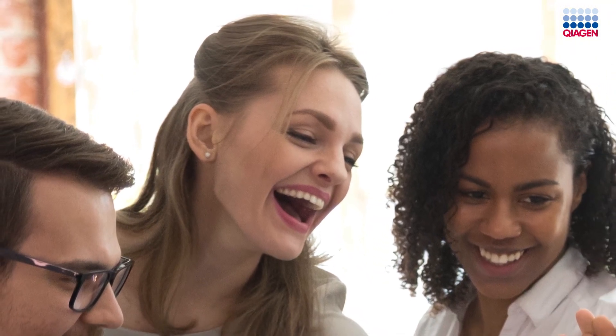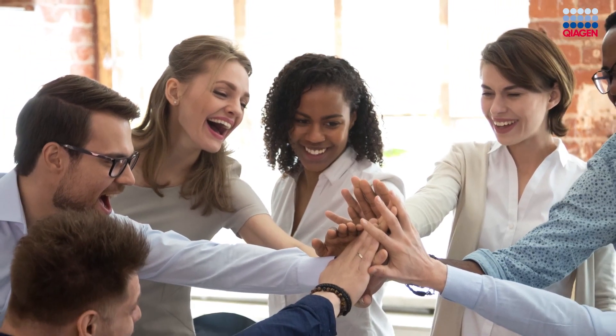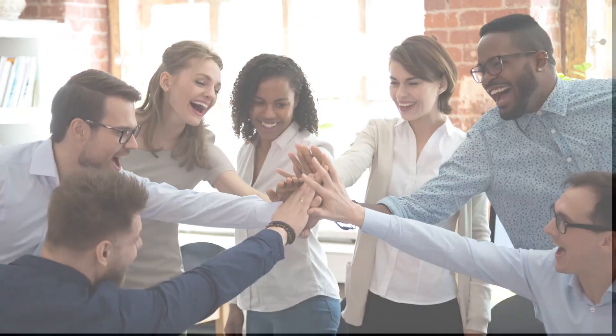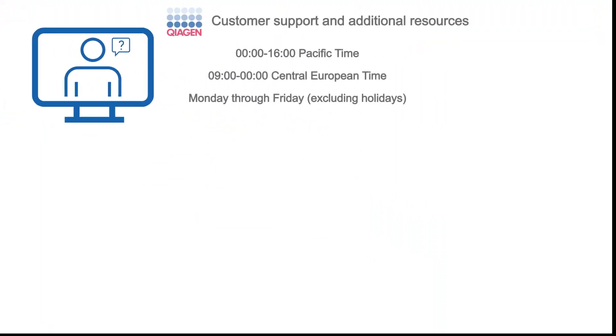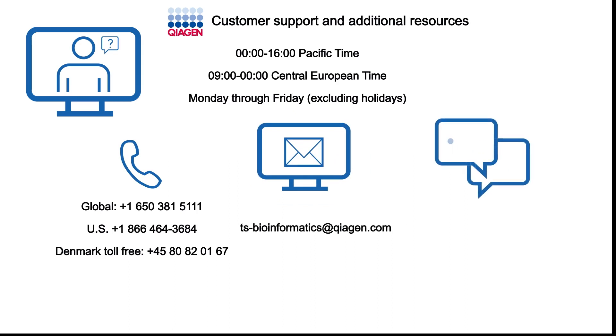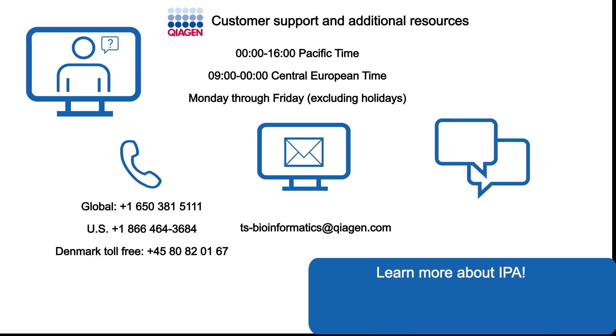Thanks for watching this video! We hope that you have a better understanding of the false discovery rate and how you can control it by adjusting your p-values in IPA. These tools can allow you to feel more confident in your discoveries and insights. If you have any questions, please contact us via phone, email, or chat. You can learn more about IPA at digitalinsights.qiagen.com and watch more video tutorials at tv.qiagenbioinformatics.com.